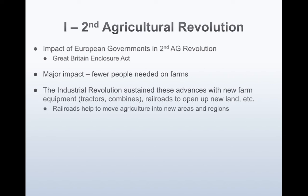These advances were sustained with new farm equipment like tractors and combines, and railroads to open up new land. Because fewer people were needed due to the Second Agricultural Revolution, they left the farms and went to the cities where they then participated in the Industrial Revolution. The Industrial Revolution then further fueled the Agricultural Revolution — they're a symbiotic relationship. Railroads helped move agriculture into new areas because farmers could be further from cities and still get their goods there before they spoiled.